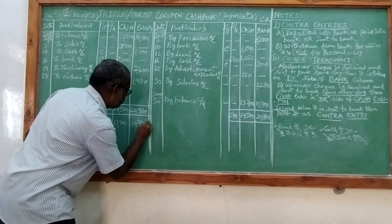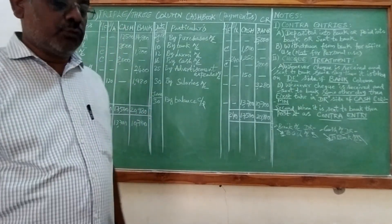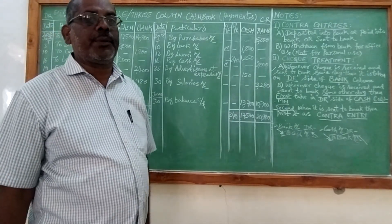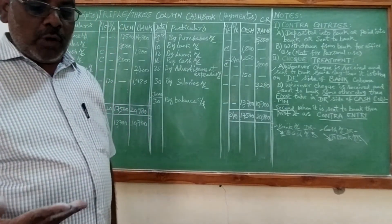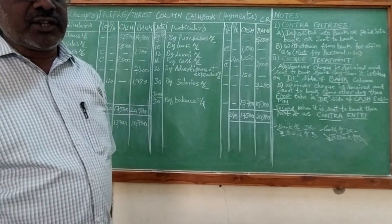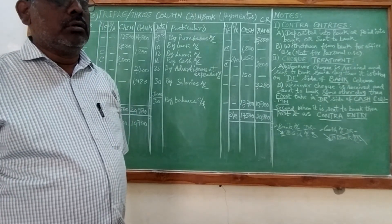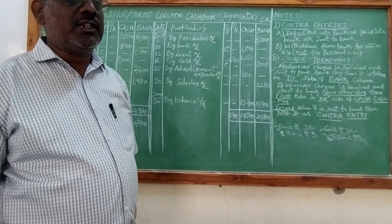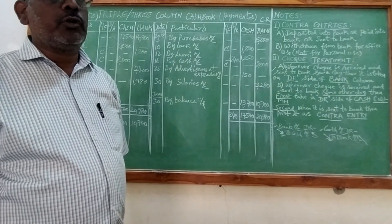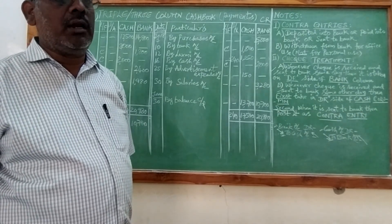Dear students, with this we have completed Problem Number 15 of three column cash book or triple column cash book from the Telugu Academy textbook, prescribed by the board of intermediate education for Telangana state as well as Andhra Pradesh state. If you like my video, please share with your friends, do not forget to subscribe, and you can pass any comments on this video through my Gmail. Thank you.